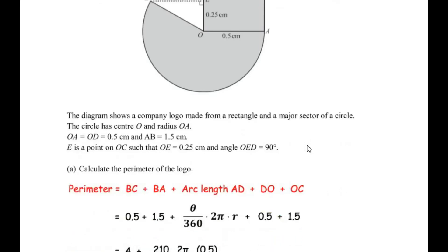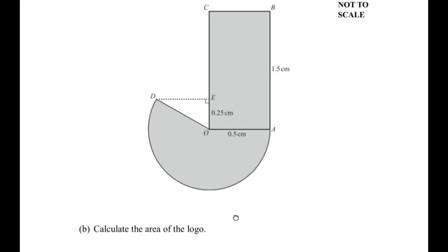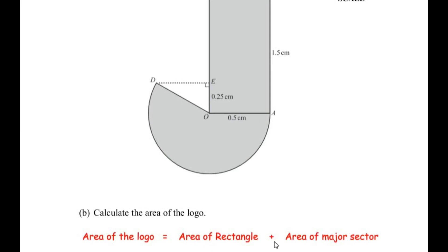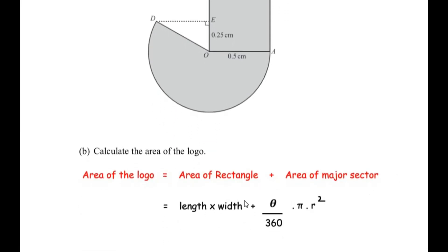Now let us move on to the next sub question: calculate the area of the logo. The logo is made up of two shapes — a rectangle and a major sector — so we simply add their areas. Area of the logo equals area of rectangle plus area of major sector, using the formulas: length times width for the rectangle, and theta over 360 times πr² for the major sector.